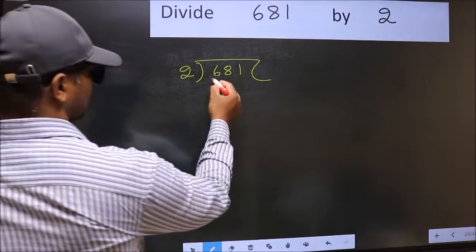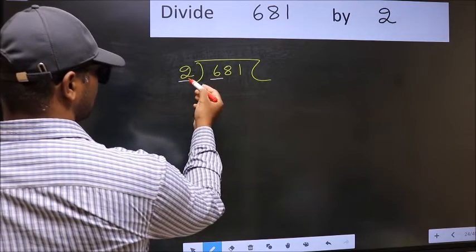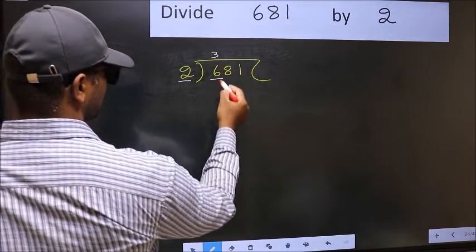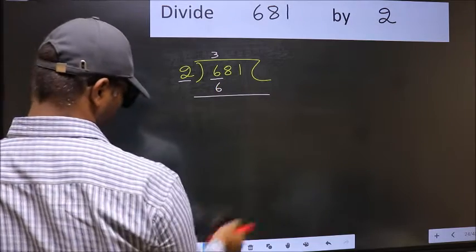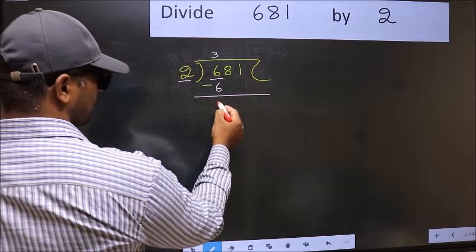Here we have 6 and here 2. When do we get 6 in 2 table? 2, 3 is 6. Now, you should subtract. 6 minus 6, 0.